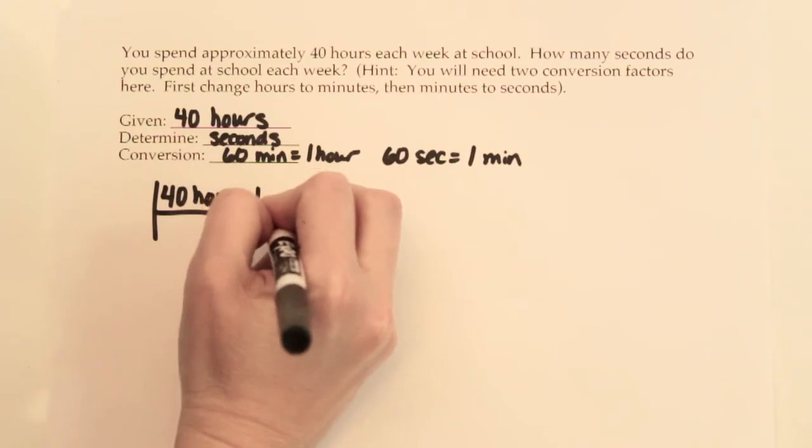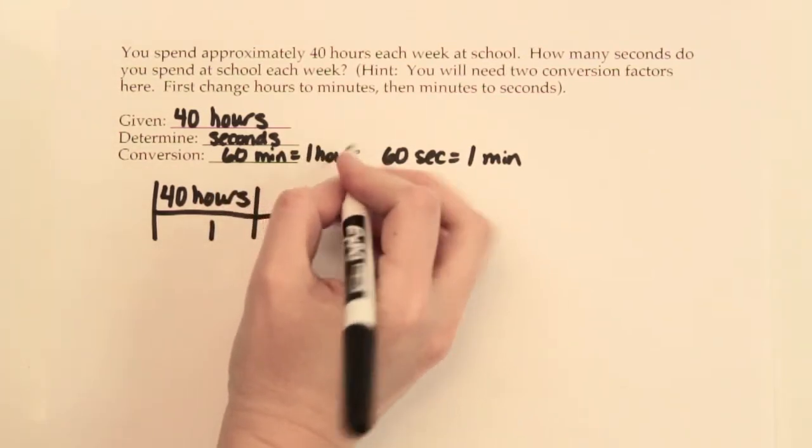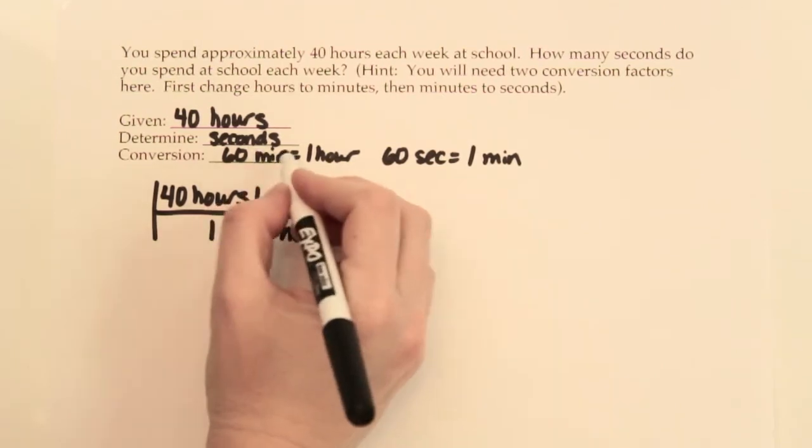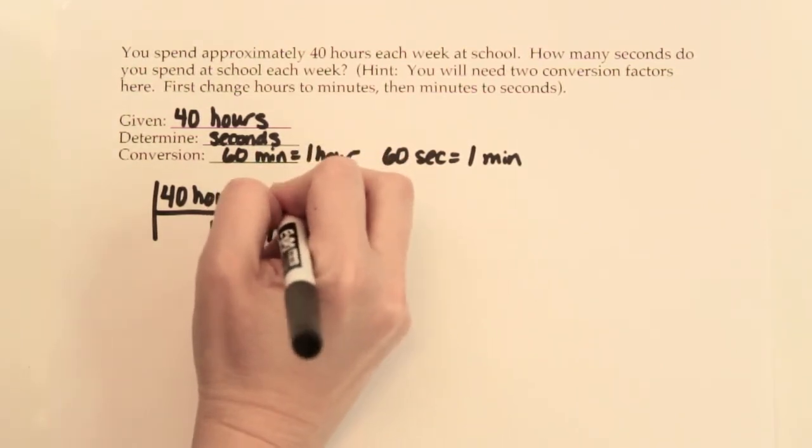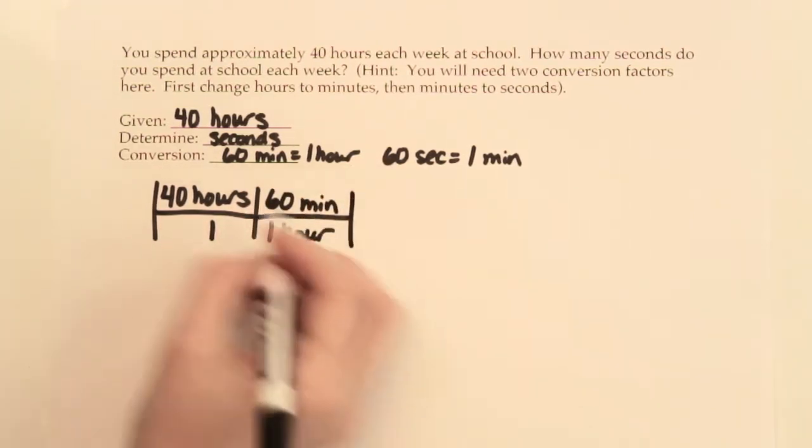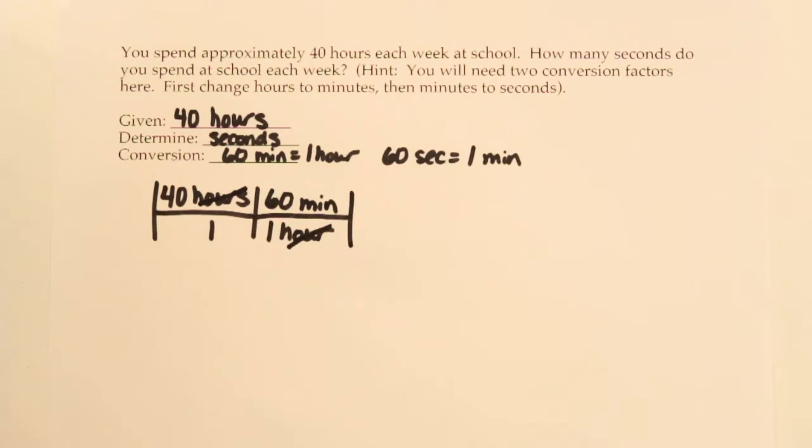Because I want the hours part to cancel out and go away, I'm going to take the one hour part of that conversion factor and put it on the bottom. The 60 minutes part is going to go up on the top. That way our hours and hours can cancel out.